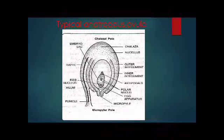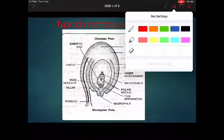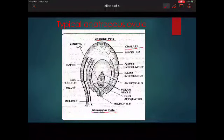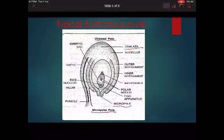For the anatropous ovule, you have to learn about its position. The lower side where the micropyle is present is called the micropylar pole or micropylar end. Opposite to the micropylar pole there is the chalazal pole, and at the chalazal pole, chalaza is present — that open space is there. The micropyle is meant for the entry of the pollen tube, so the pollen tube will enter through the micropyle only.